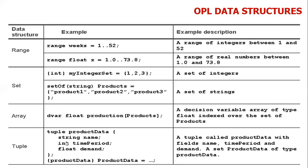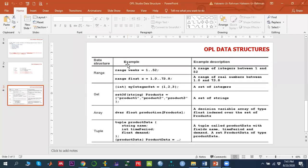The difference between tuple and array is that we can store different types of data in a tuple and then access those particular data types. In an array we can only store float type or integer type values, but in a tuple we can store different types of data — like string type, integer type, and float type — and then access that particular data as well.